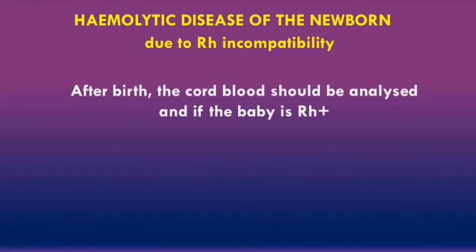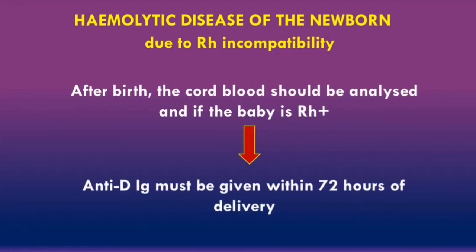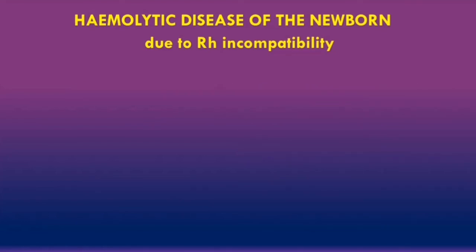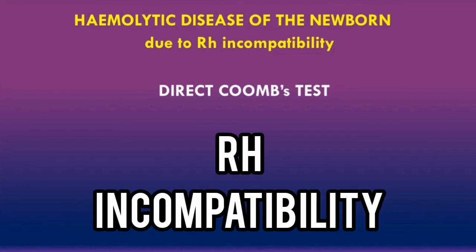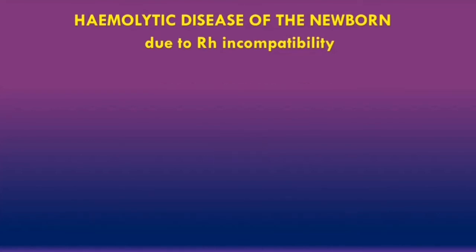After birth, the cord blood should be analyzed, and if the baby is found to be rhesus positive and the mother is rhesus negative and hasn't been sensitized yet, then anti-D immunoglobulins must be given within 72 hours of delivery. In terms of diagnosing hemolytic disease of the newborn due to rhesus incompatibility postnatally, a direct Coombs test can be performed, which can demonstrate rhesus incompatibility between the baby and the mother.